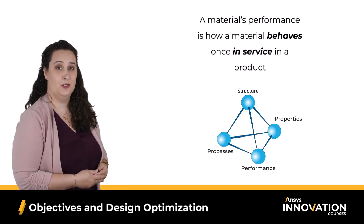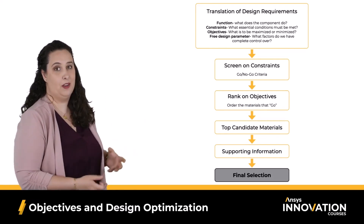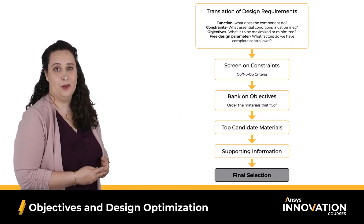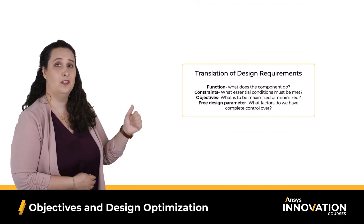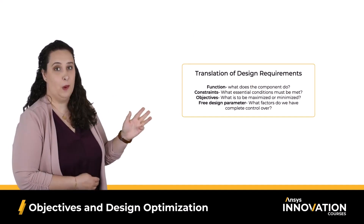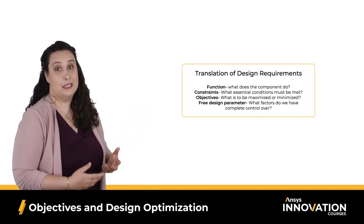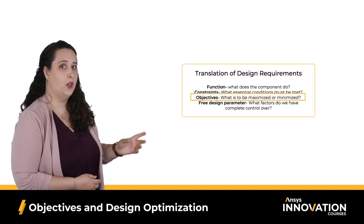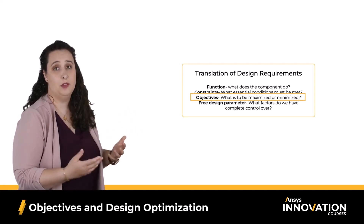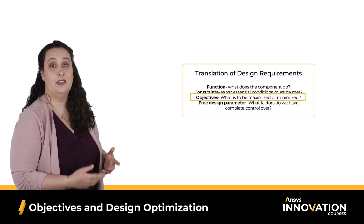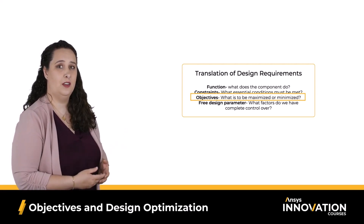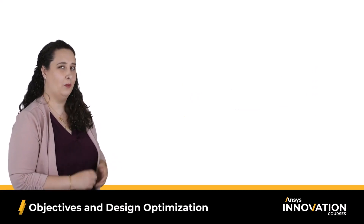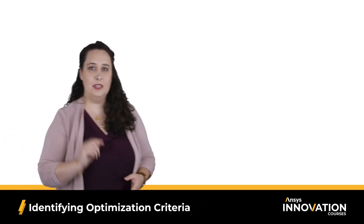In our basic systematic material selection course, we introduced the Ashby selection methodology as a way to logically translate our design requirements into a material's functions, constraints, objectives, and free design parameters that we can use to identify the top material candidates for a given design. Specifically when we talked about objectives, we're talking about what we're trying to optimize in our design, and we mentioned how this is related to the function of the design, especially for load-bearing components. But all the examples we showed only had one objective, so let's look at another example.